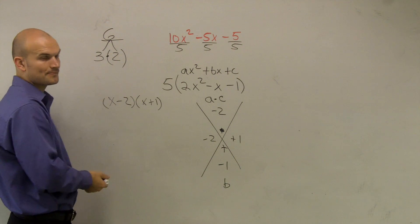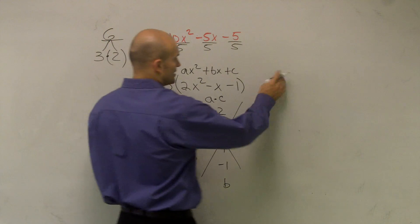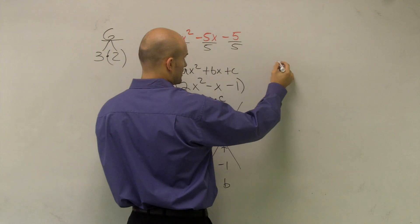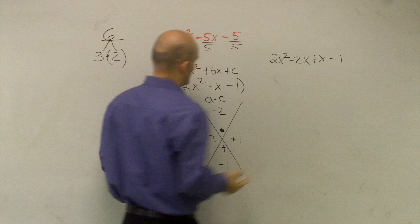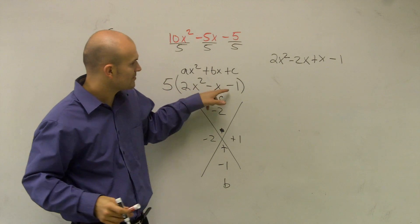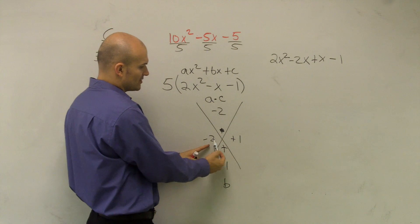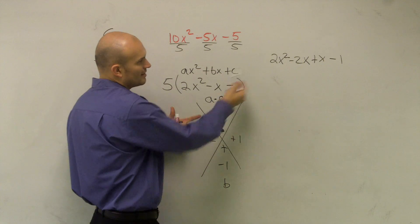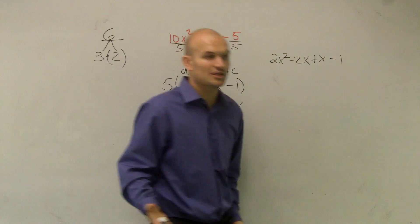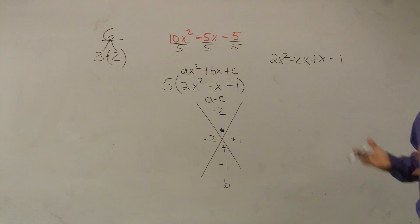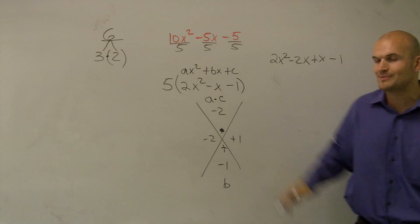What we're going to do is use those two numbers to rewrite the trinomial. We expand to get 2x squared minus 2x plus x minus 1. All I did was replace the negative x term with negative 2x plus x, since negative 2x plus x still equals negative x. We haven't changed the value — it's still the same expression, still multiplied by 5.